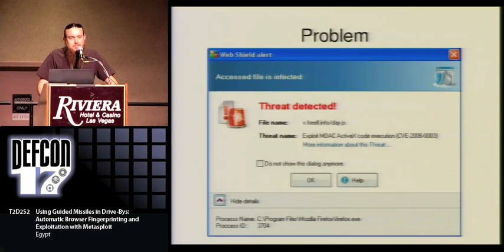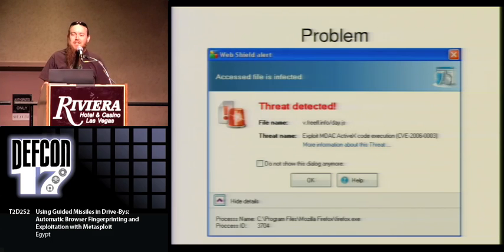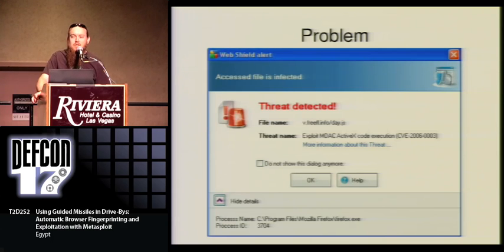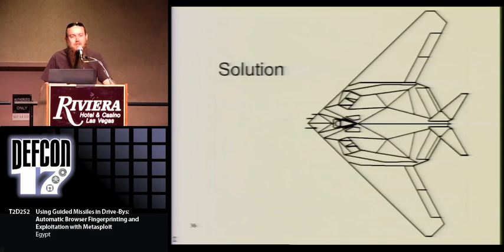So now we've picked a missile. There's another problem: AV. AV sucks for a couple of reasons. If a user is browsing along and they go to all the effort of clicking on your link, they go to your evil web server, and the AV catches you — they don't click on your link anymore. I like people clicking on my links. I want people to give me shells. AV stops my shells. So the solution here is some stealth. If we don't look like we're evil, then AV will let our shells come back, and everybody likes shells.